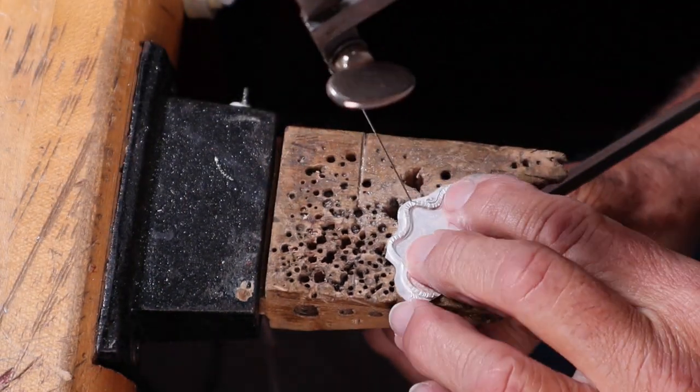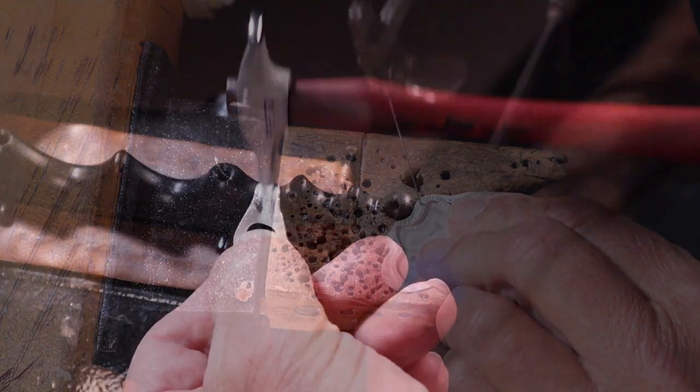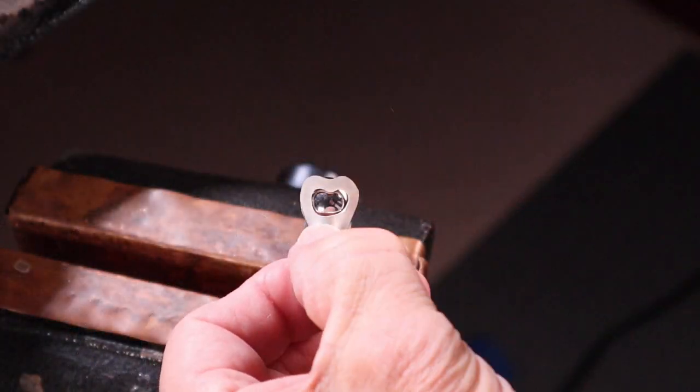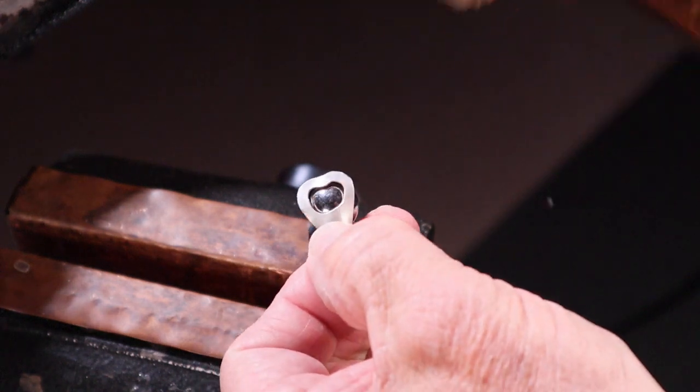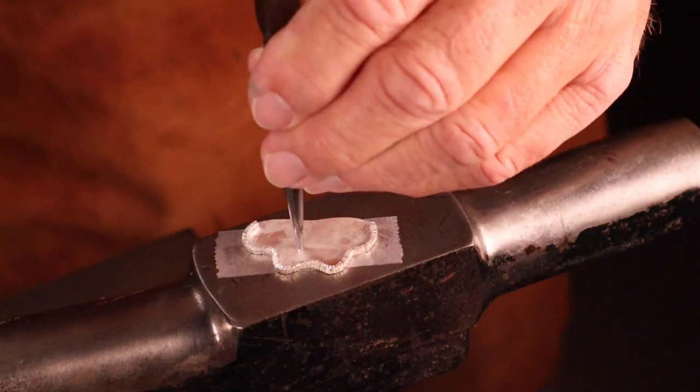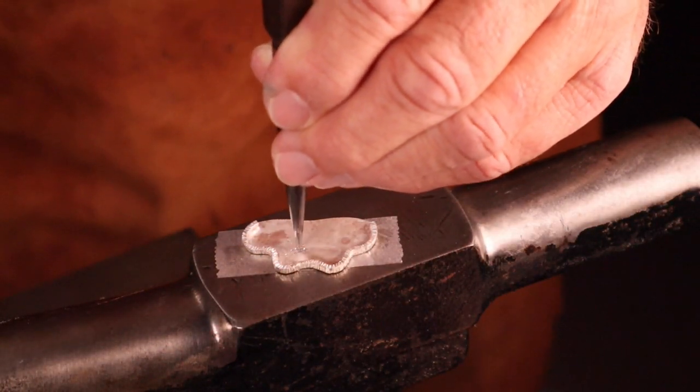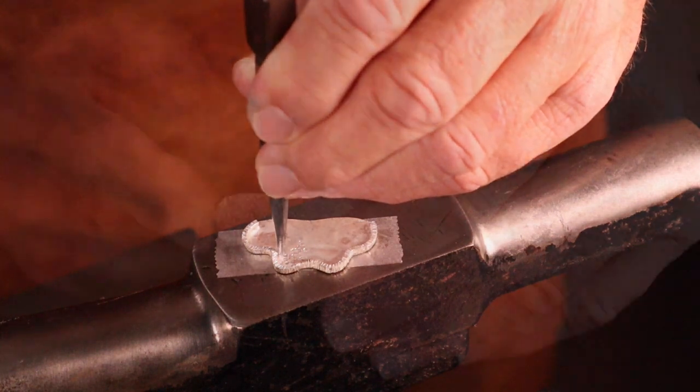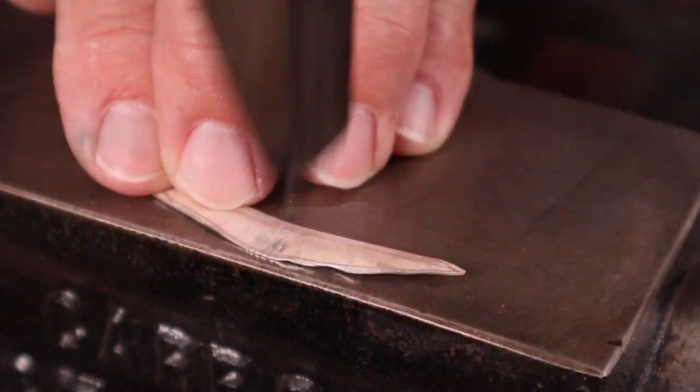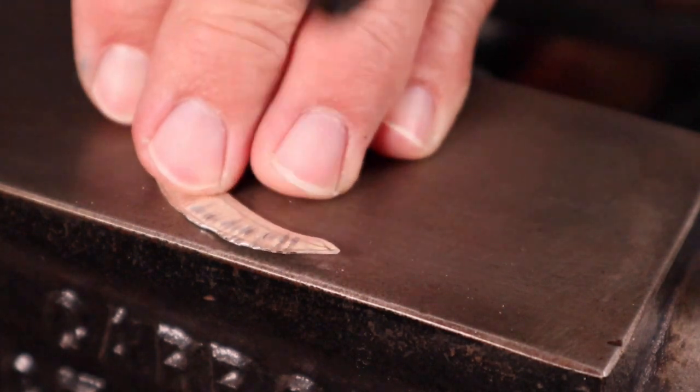Solder on a textured piece onto the base one, saw it off, make the petals more three-dimensional using the stakes and a dapping block. Texture the back sheet with a nail set.